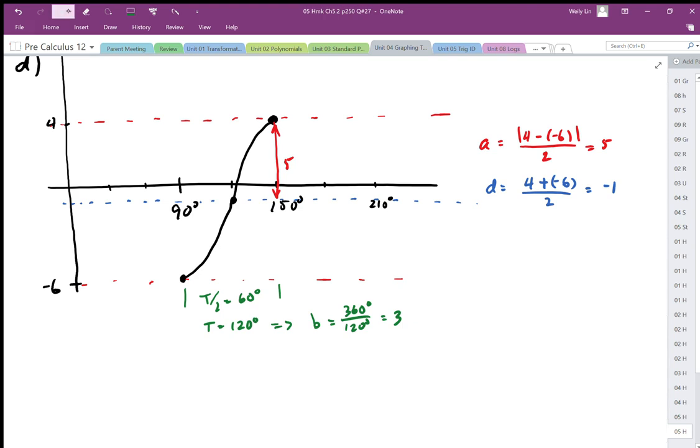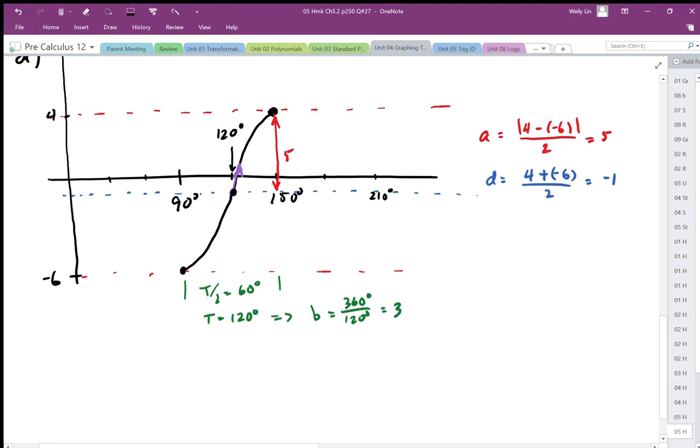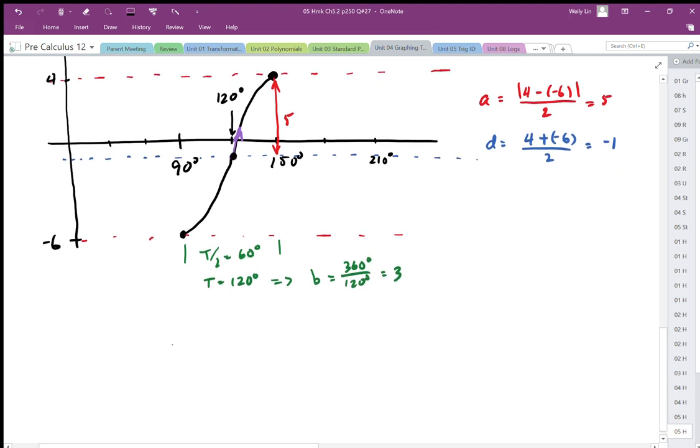Lastly, the starting position of sine, we're going to use that middle point here. It's going up, so it's going to be a positive sign. And so we'll use this position here. This position is halfway between 90 and 150. That's going to be 120 degrees. So that represents our horizontal shifts.